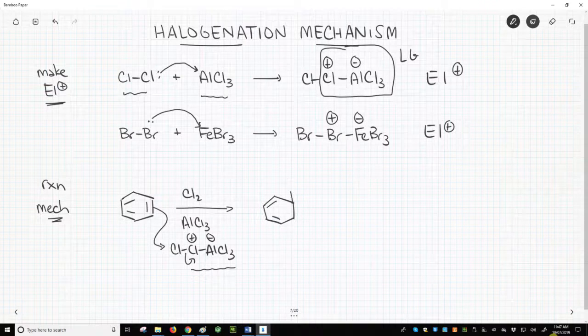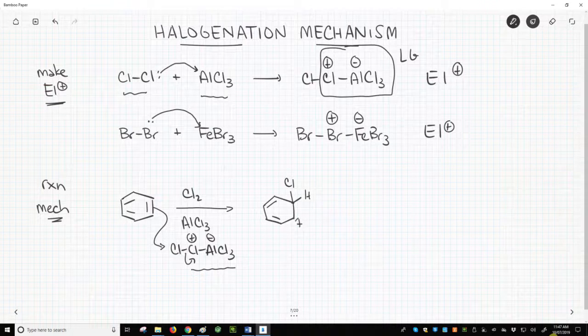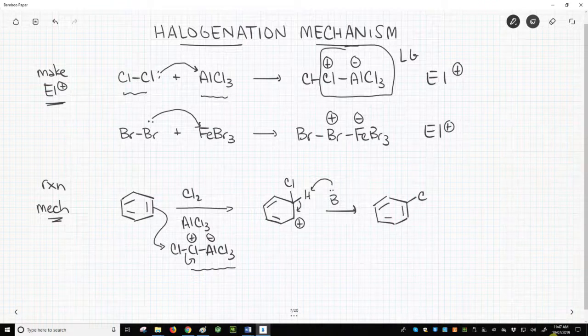We then have our nonaromatic, unstable carbocation. Some weak base in the reaction removes a beta hydrogen to form the alkene and restore aromaticity.